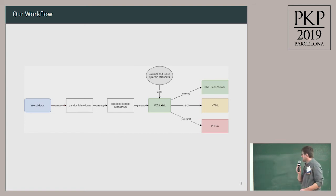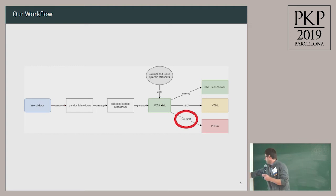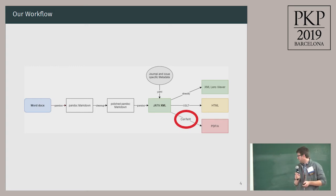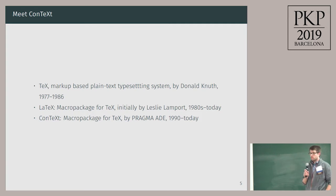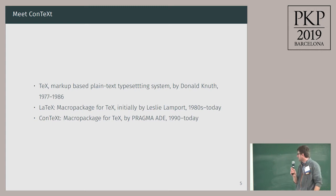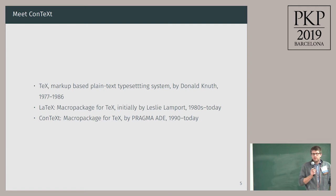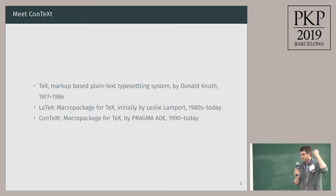That's the workflow I showed you yesterday and now we're concentrating on this last step here, going from JATS to PDF. So let's meet ConTeXt. ConTeXt is a macro package based on TeX. TeX is a markup-based plain text typesetting system initially developed by Donald Knuth in the late 70s and 80s, so it's kind of a dinosaur.